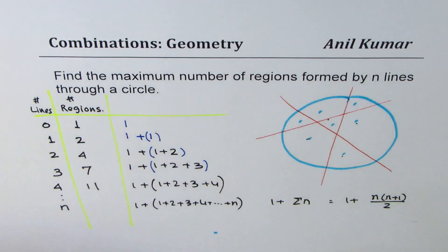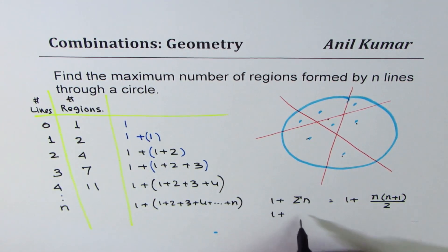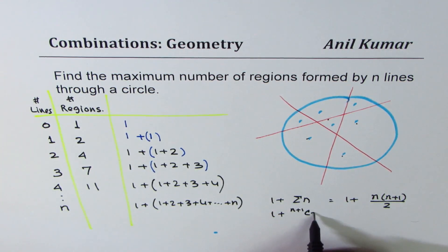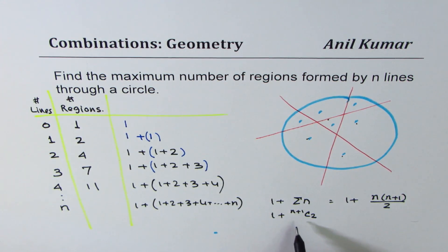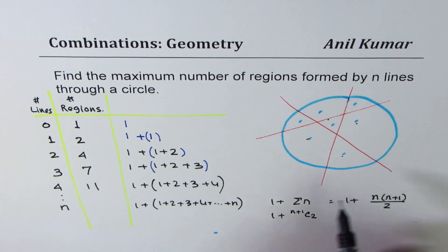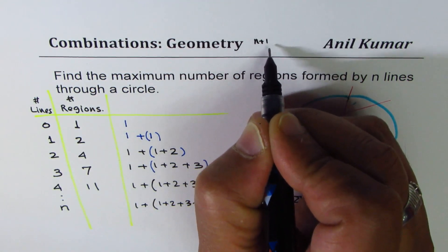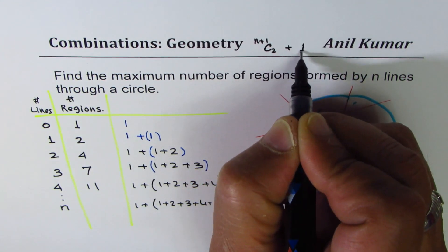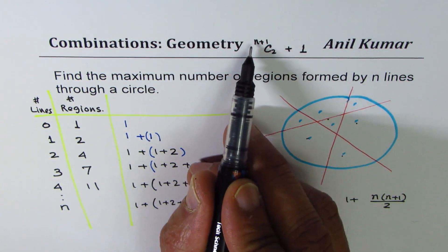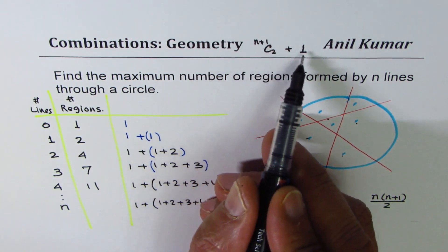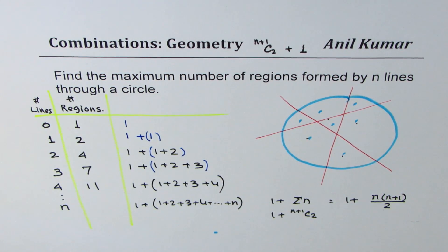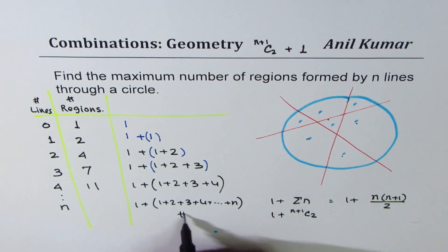When talking about combinations, this sum of n numbers is also given by (n+1)C2. So that gives us the formula: the total number of regions equals (n+1)C2 plus 1. We have derived the formula for the number of regions, which is (n+1)C2 + 1. For example, if the number of lines is 10, then n equals 10 and we'll have 11C2 plus 1 as the total number of regions.